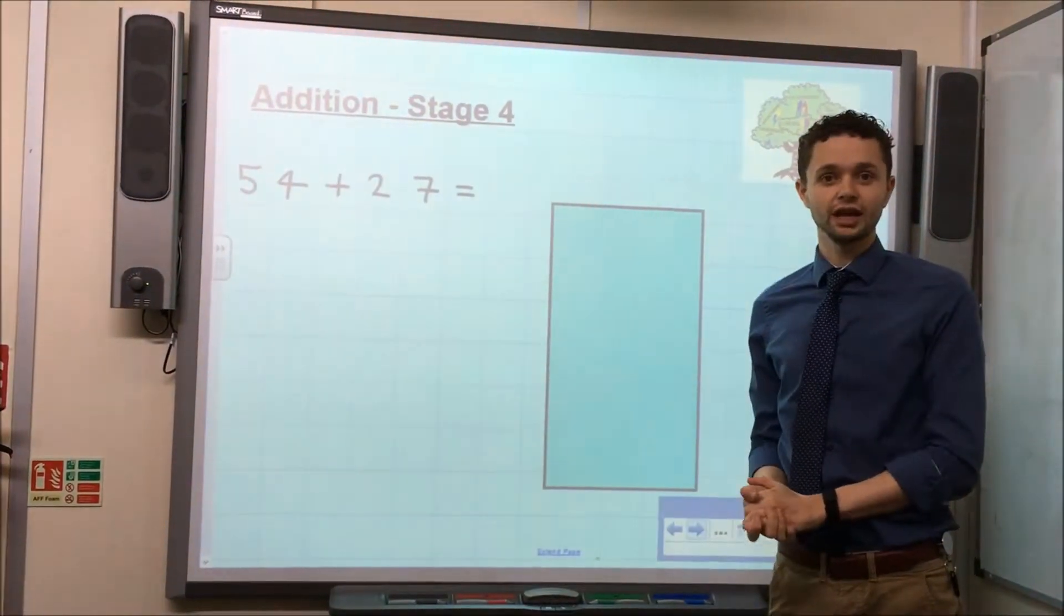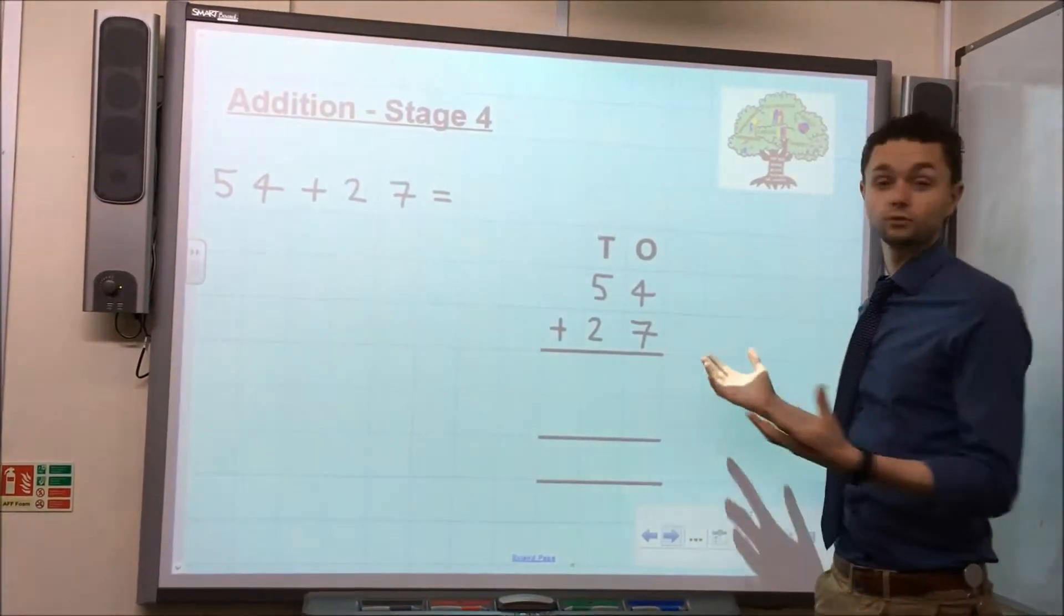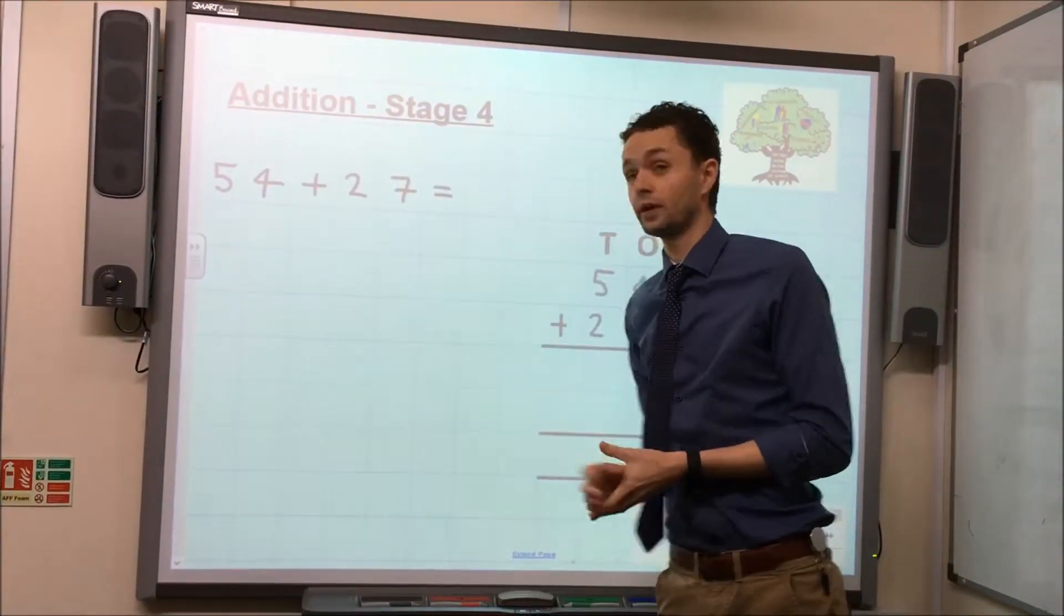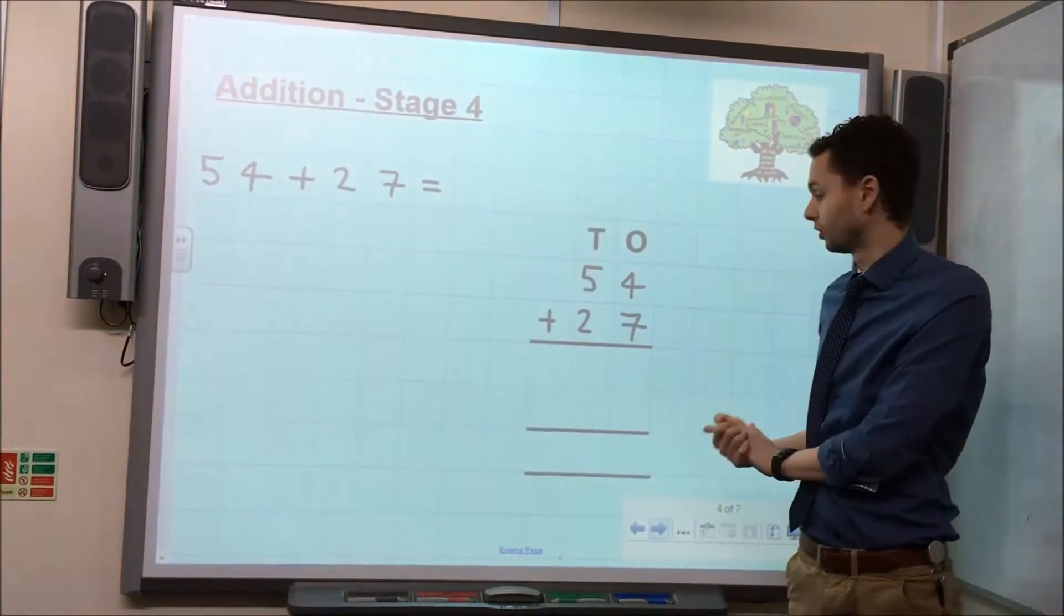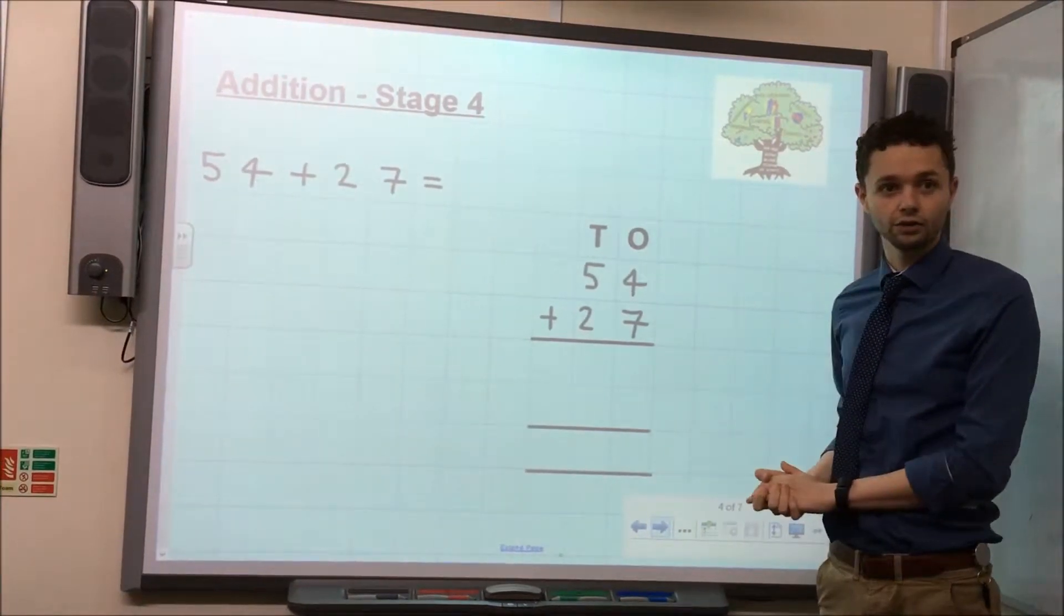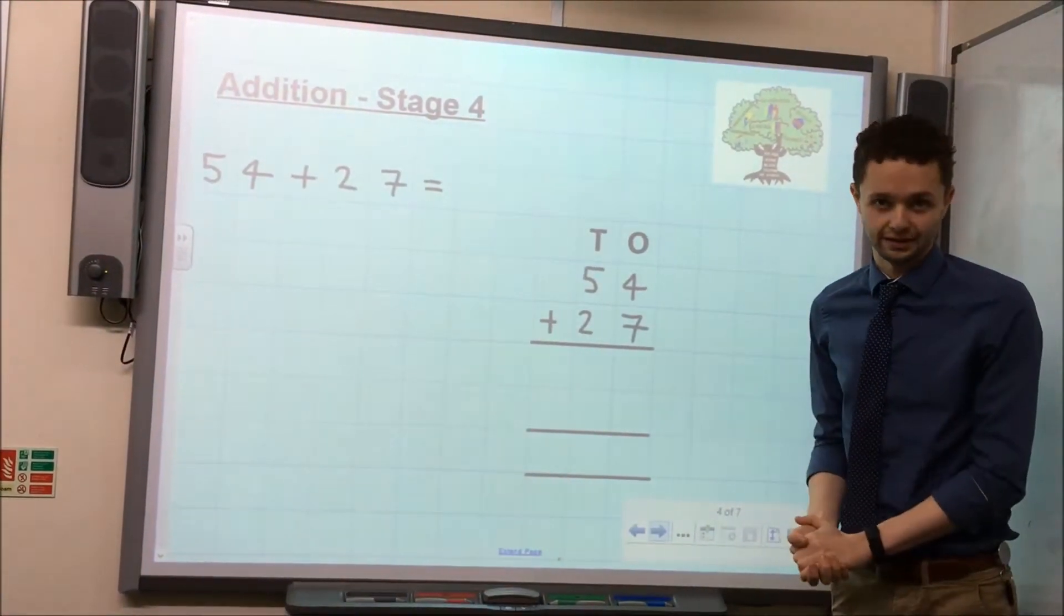So, we've got our calculation, let's start off by looking at the method in action. Starting point, as always, is to take our calculation, 54 and 27, and to set it out neatly with the numbers in the correct columns. We then leave two lines underneath for the two parts of the calculation, and a final line at the bottom for our final answer.